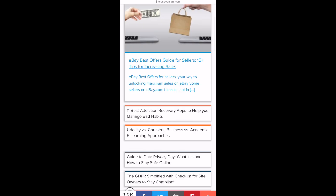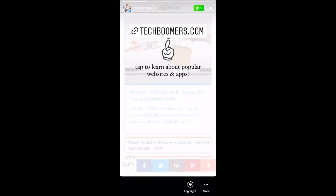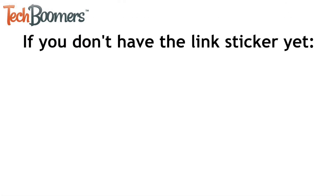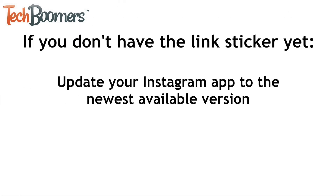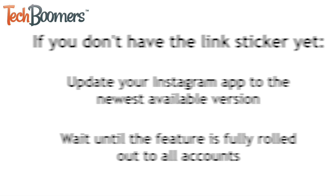That's all it takes to use the Instagram Stories link sticker. If you don't have access to the link sticker feature yet, you may need to update your Instagram app to the newest version. Instagram is still in the process of rolling out this feature to all accounts, but you should get access in the coming weeks if you don't have it yet.